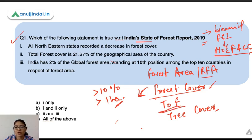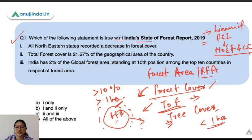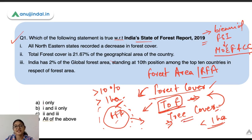Trees outside forest refers to all tree patches that are outside the recorded forest area, irrespective of their size. Tree cover is a subset of trees outside forest — it refers to tree patches outside the recorded forest area where the size of the patch is less than 1 hectare. So tree cover is a subset of trees outside forest.